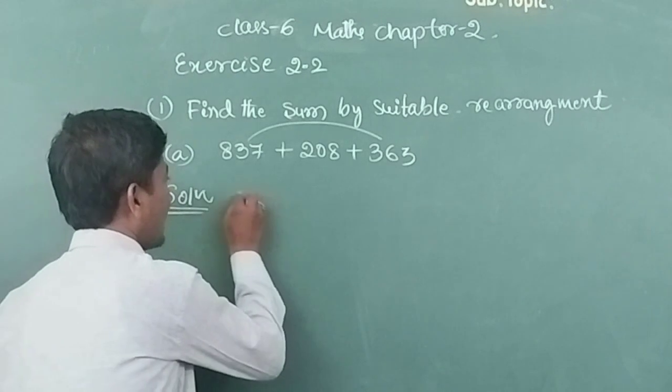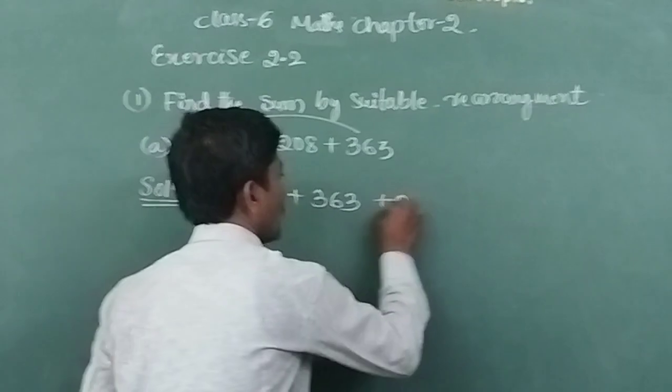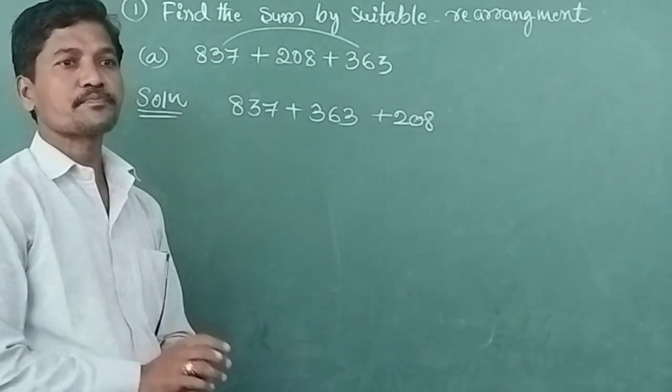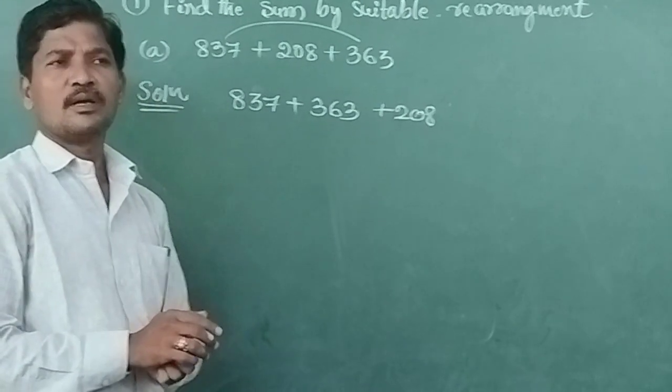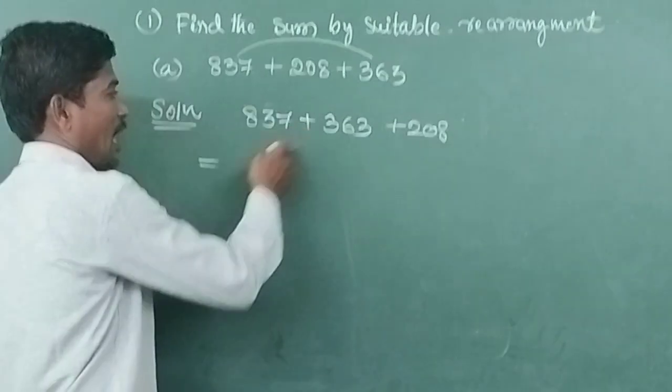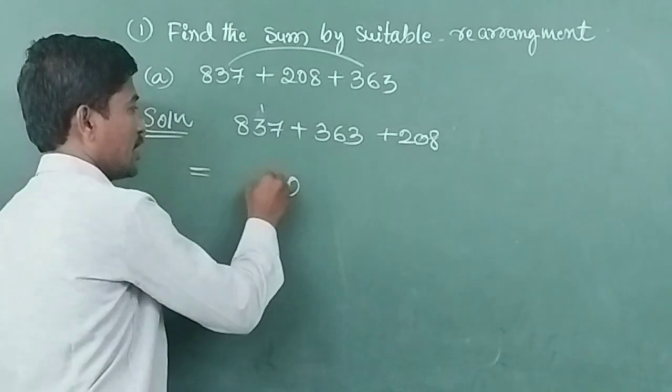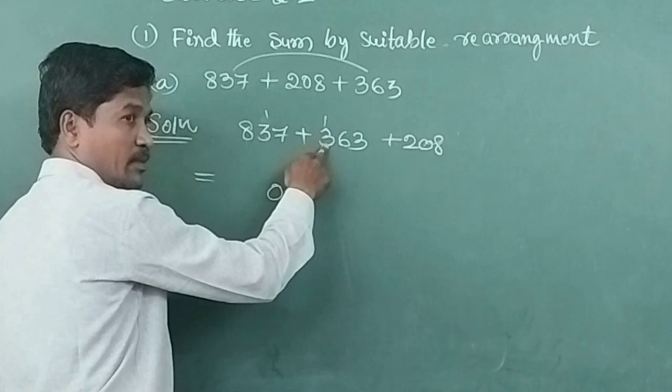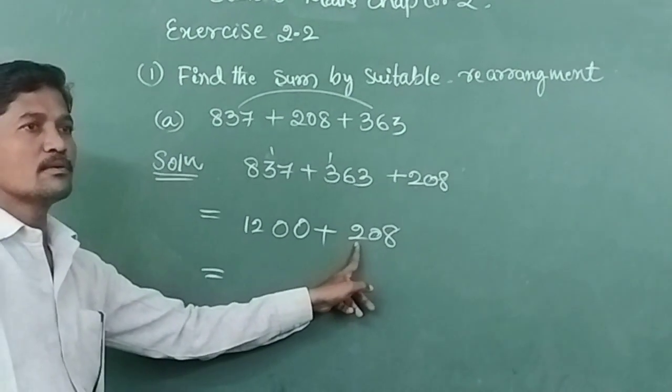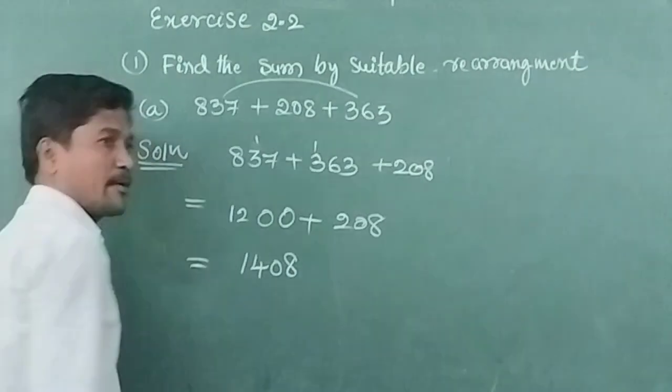837 plus 363. Then later I will write 208. Means I want to add these 2 first. See here. 7 plus 3? 0, carry 1. 6 plus 3 plus 1? 9 plus 1 is 10. 0, carry 1. 8 plus 3? 12. Plus 1? 12. 1200 plus 208. Now you tell. 1200 plus 200? 1400. 1400 plus 8? Then what is the answer? 1408.